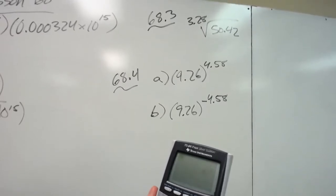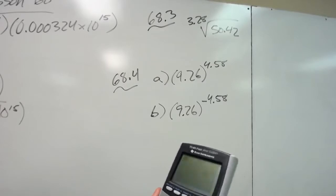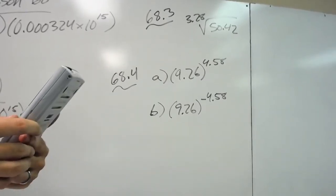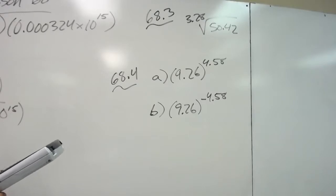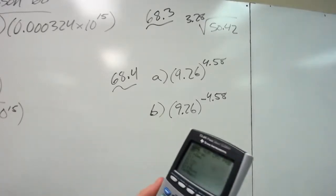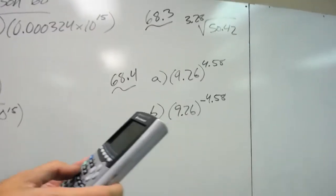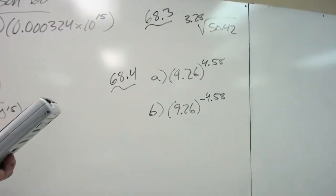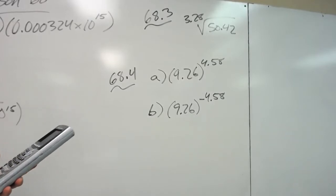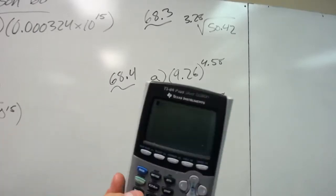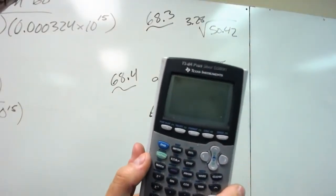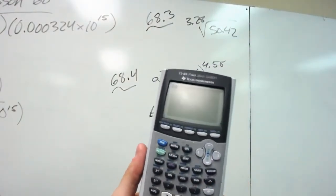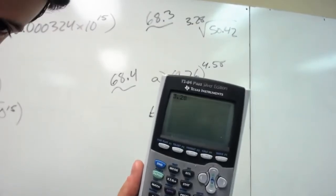So what we do to solve for 68.3 is we have 50.42 to the 3.28 root or whatever. So I'm going to punch in my square root, or actually, sorry, and make sure I have this right. Okay, hold on, let me make sure I have this right first. So what I'm going to do to solve here, I had to refresh myself, is I'm going to actually type in 3.28 first. Type in 3.28.